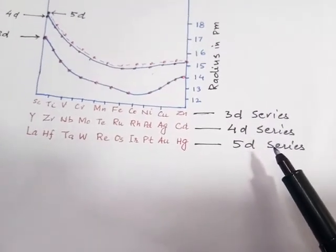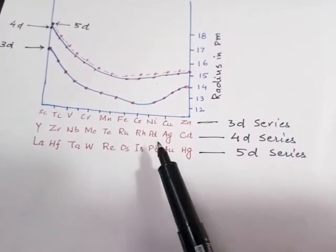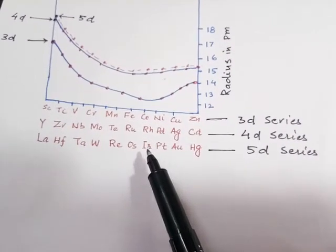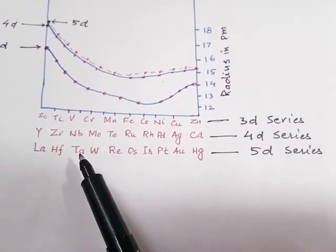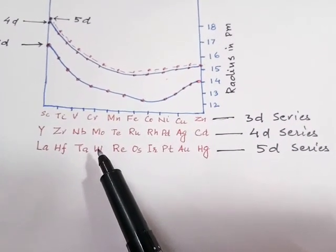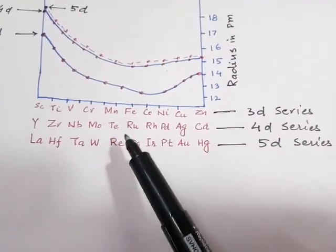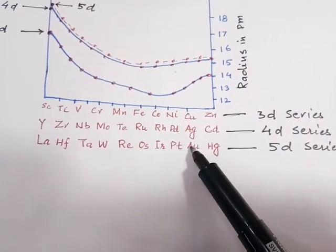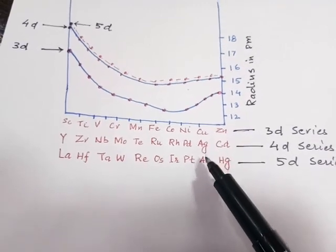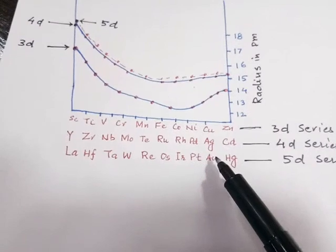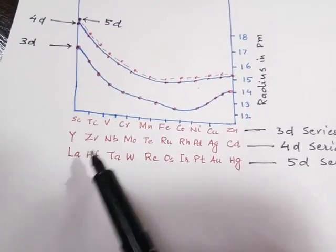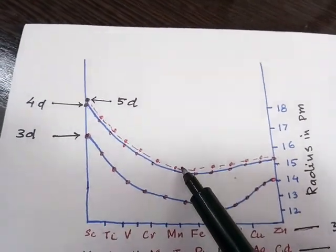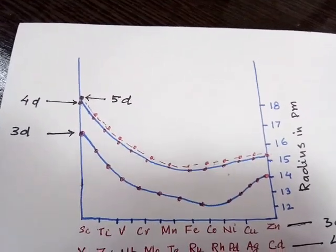The next electron going to the 5d orbital experiences more attraction due to the increased effective nuclear charge, and this leads to a decrease in size of hafnium so that it is nearly equal to zirconium. That is how we explain the nearly equal size of 4d series and 5d series elements. Electrons along the 5d series go to the 5d orbital, but the fully-filled 4f orbital has a very poor shielding effect. Therefore, effective nuclear charge is greater and the decrease in size is greater, meaning corresponding elements of the two series nearly coincide in atomic radii. The reason for this equal size is lanthanoid contraction and the presence of 14 elements between lanthanum and hafnium.